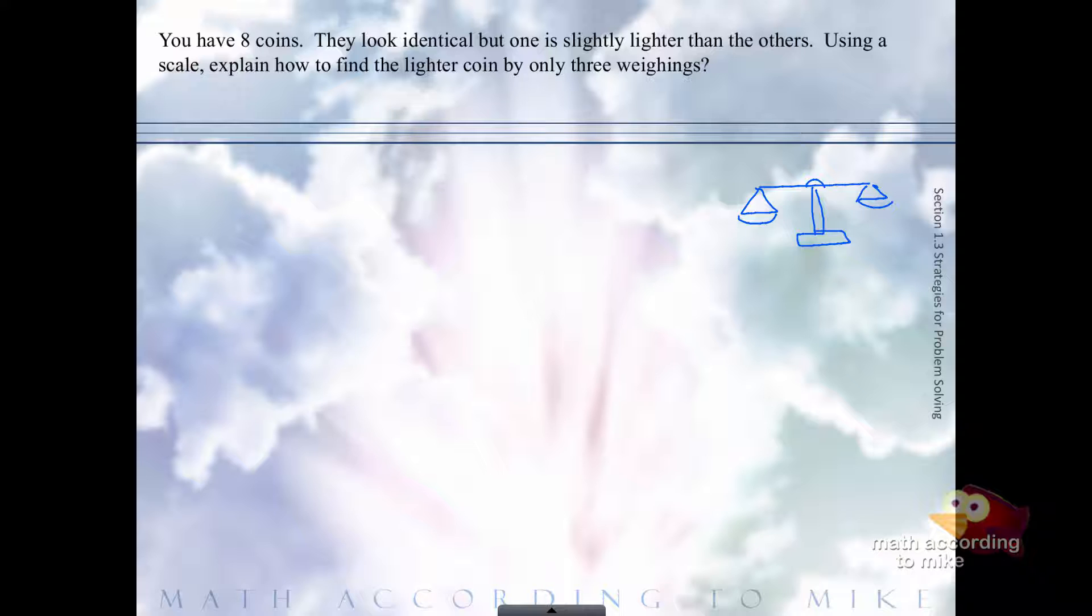You split them in half. You're going to put a group of four on the left-hand side, a group of four on the right-hand side. Because one coin is lighter, one of the baskets will raise up to say hey, this one's the lighter coin.